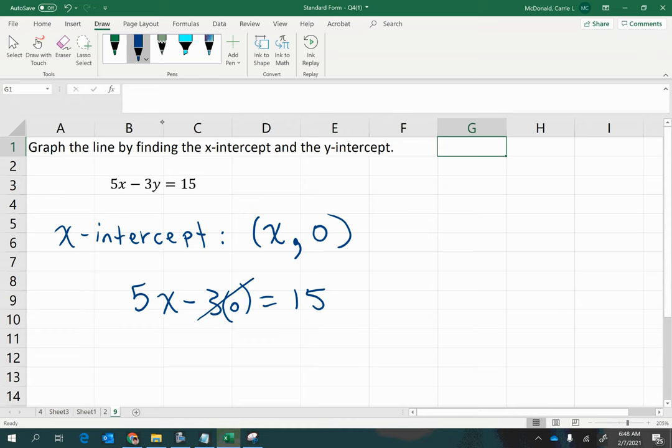so I'm really just now solving 5x equals 15, which if I divide both sides of this by 5, I'll get x equals 3. And so that is the coordinate for my x-intercept.